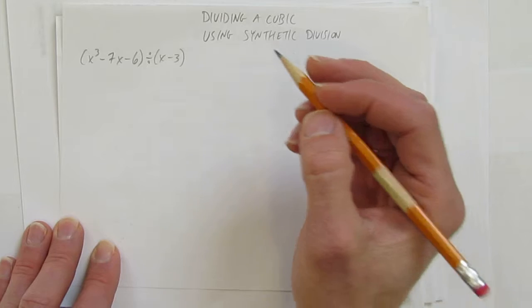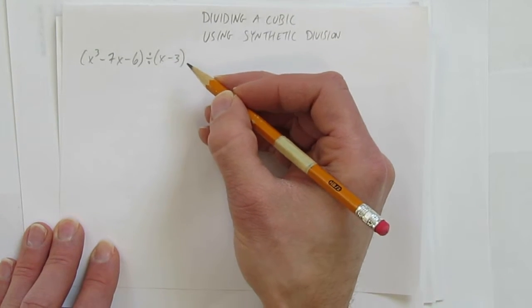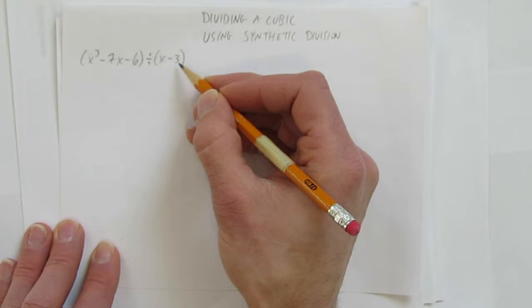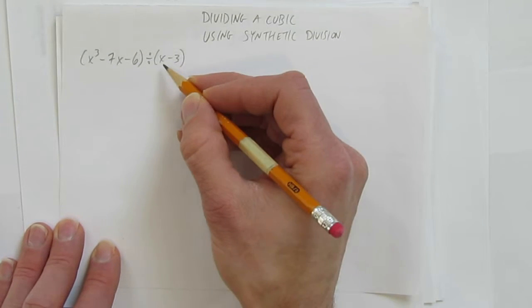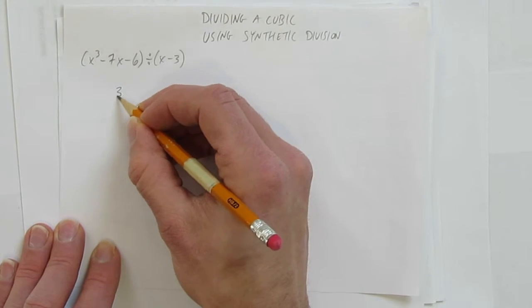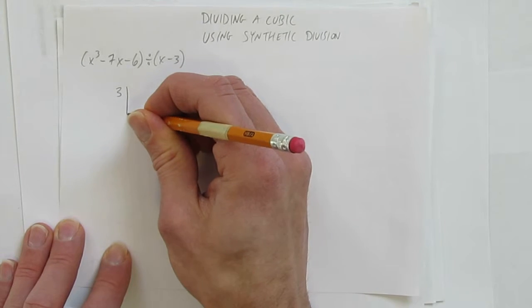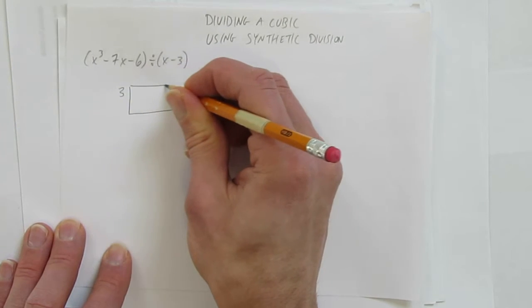When you're doing synthetic division, you take the factor but you use its zero. What zero corresponds with this factor? The opposite sign. Or, what makes this bracket zero? A 3. So we're going to use a 3, that is the opposite of this factor, and we'll put that into our synthetic division box.